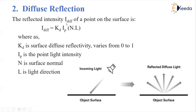The reflected intensity for diffuse reflection is calculated as KD × IP × (N · L), where KD is the surface diffuse reflectivity with value varying from 0 to 1, IP is the light intensity, N is the surface normal, and L is the direction of the light. Whenever light or sunlight falls on a surface, it reflects in all directions equally. Unlike ambient illumination where light comes from all directions and scatters everywhere, here light comes from a specific direction and when it falls on the object surface, it scatters equally in all directions — that is the difference.